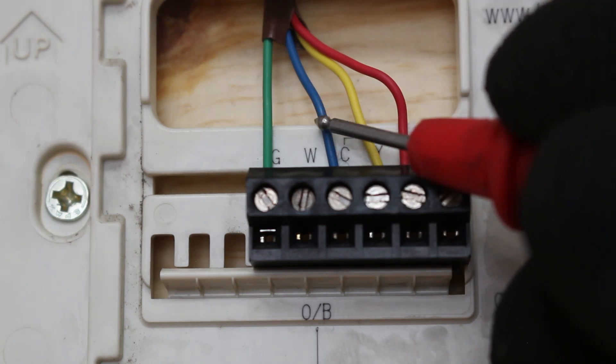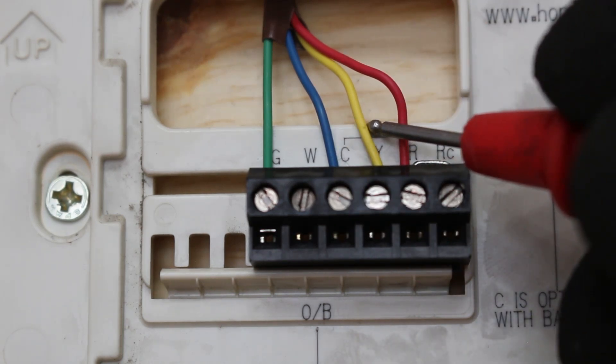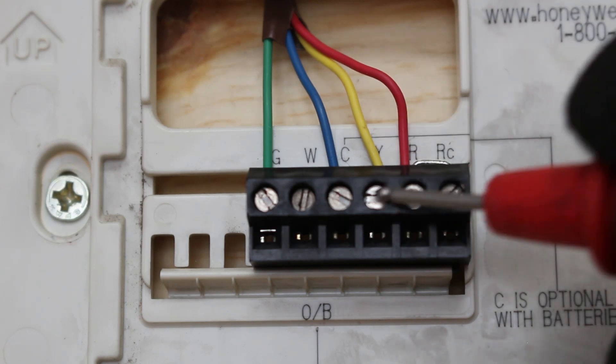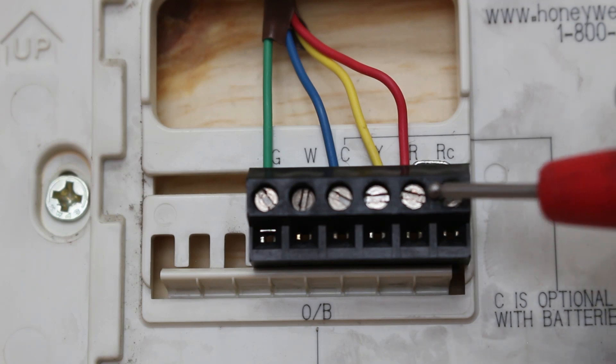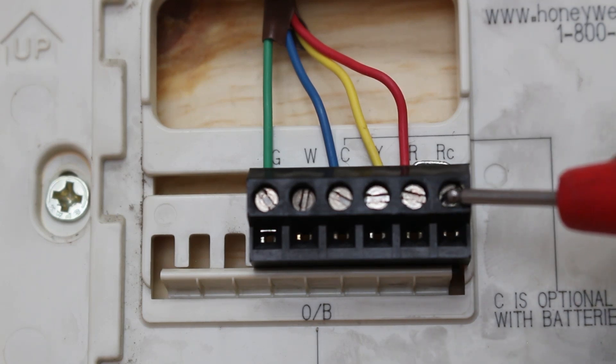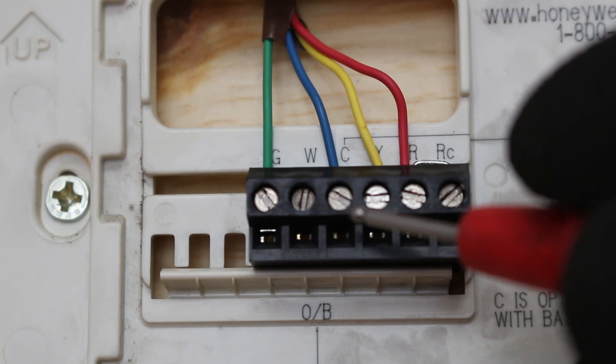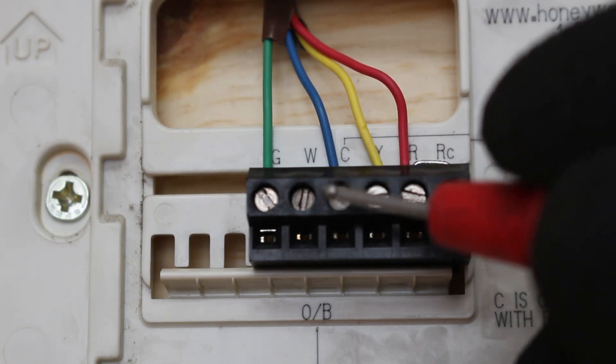Next you can see we have a blue wire which is our common. Y is our cooling in yellow. Then we have R which is jumped over to RC. So these two terminals is our power in, so 24 volts and common. So that's how we complete the circuit.